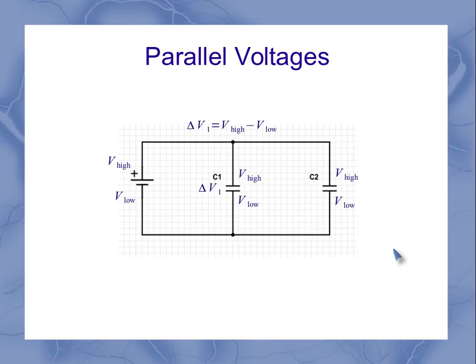Capacitor 1 has a voltage which is the potential difference of high minus low. Capacitor 2 also has a potential difference of high minus low. So in parallel, the voltages,